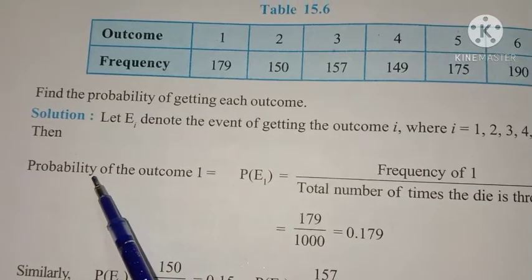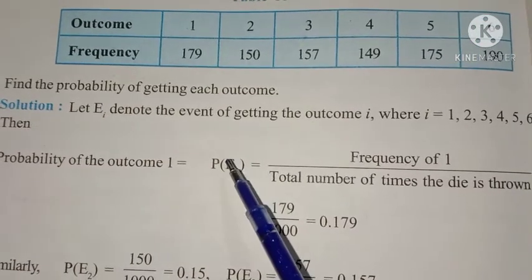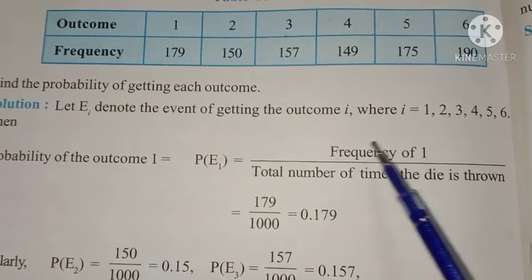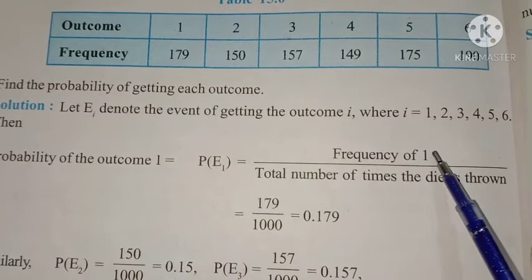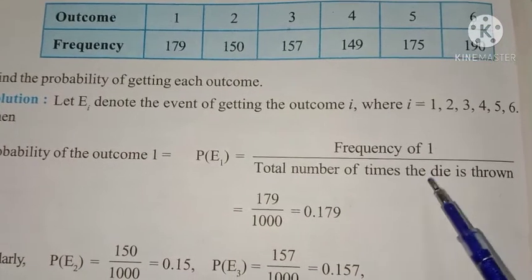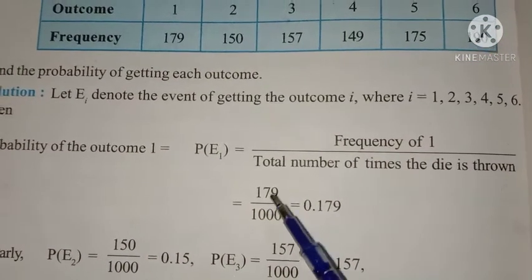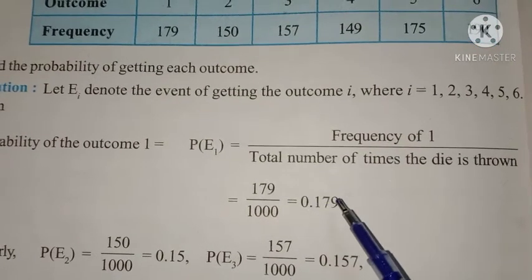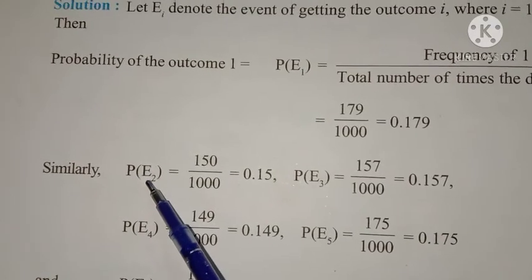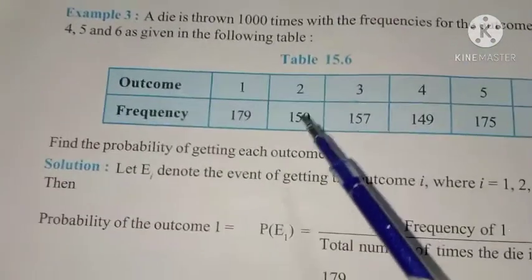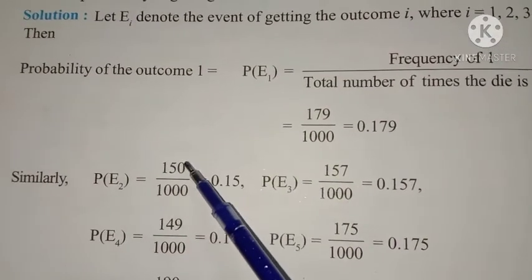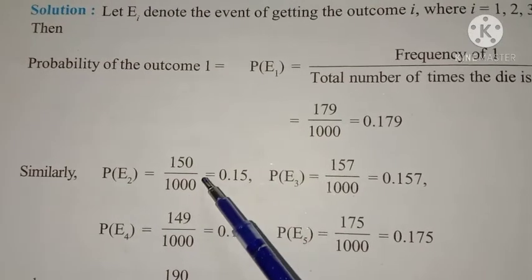P of E1 is the probability of getting outcome 1. Favorable number divided by total number: the frequency of 1 means how many times 1 appears, which is 179. Total number of times the die is thrown is 1000. So 179 by 1000 equals 0.179. P of E2 means probability of getting outcome 2. Outcome 2 appears 150 times, so 150 by 1000 equals 0.15.